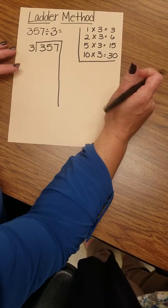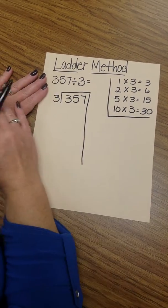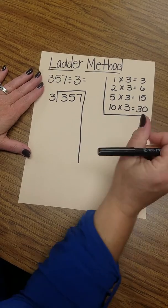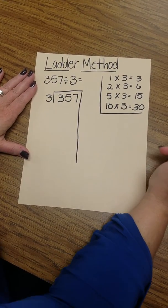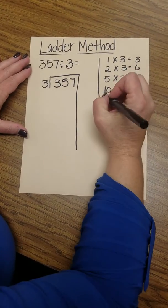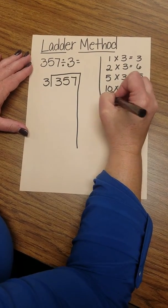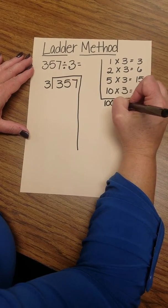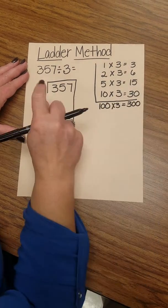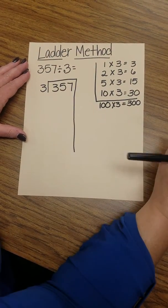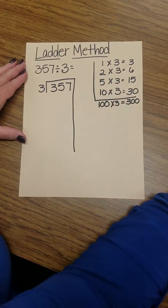So right away I notice that there's another tool that I could add to my toolbox that would be really helpful for this problem, and that is 100. Because I know 100 times 3 is 300, and since this is a large number, that's going to help me work smarter, not harder.